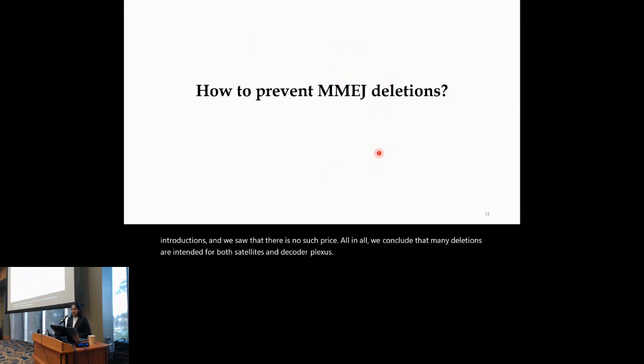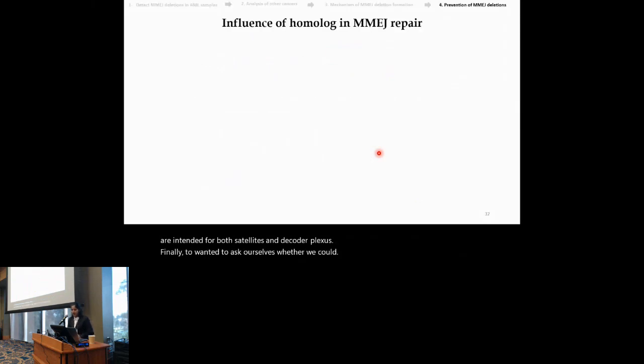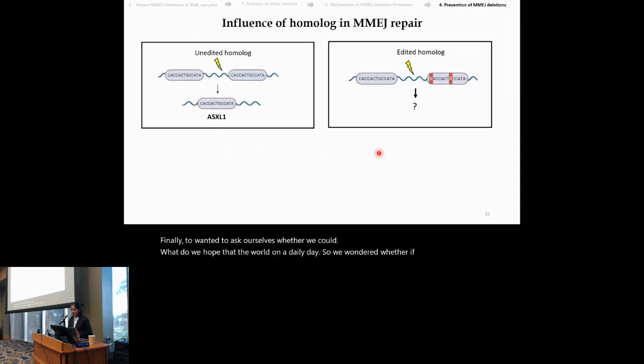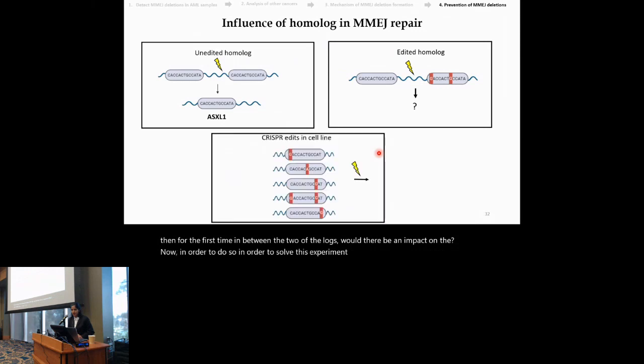Finally, we wanted to ask ourselves whether we could prevent MMG deletions. One thing we note is that there's a huge influence of homology on MMG repair. So we wondered whether if we edit the homology and then do a double-strand break in between the two homologies, would there be an effect on the MMG repair? Now, in order to perform this experiment, we used multiple CRISPR edits where we did CRISPR edits along the length of the homology and then we did a double-strand break in between the two homologies. This was performed for the ASXL1 gene.